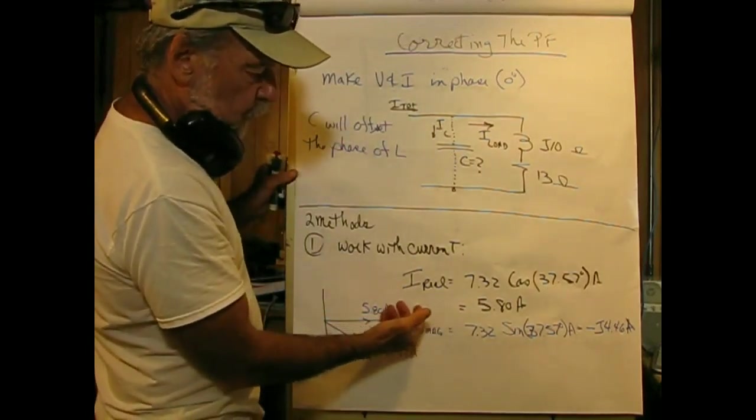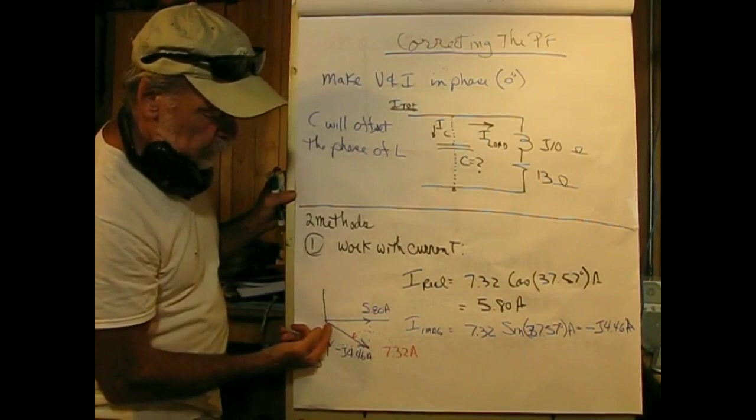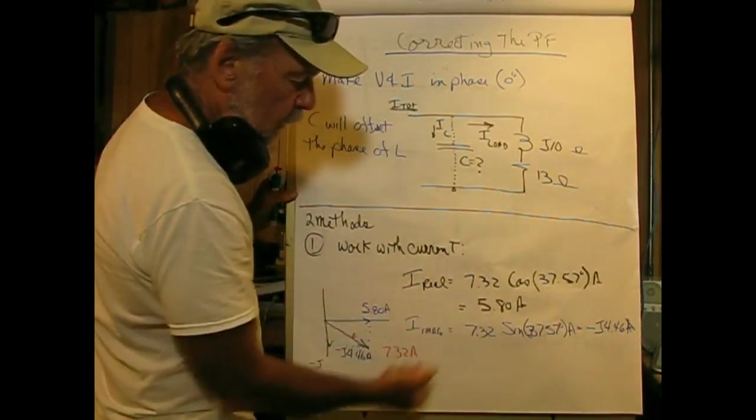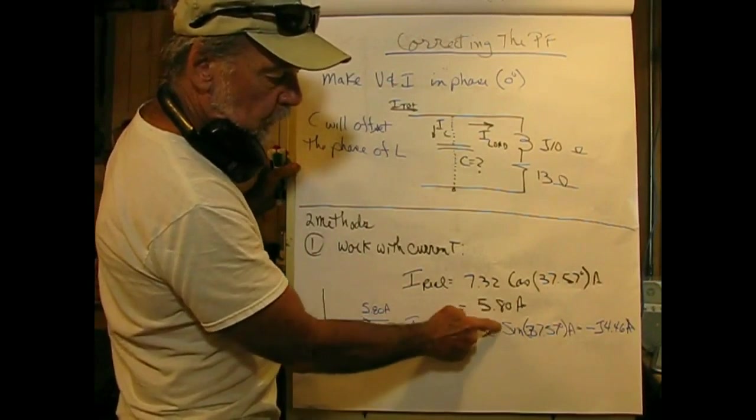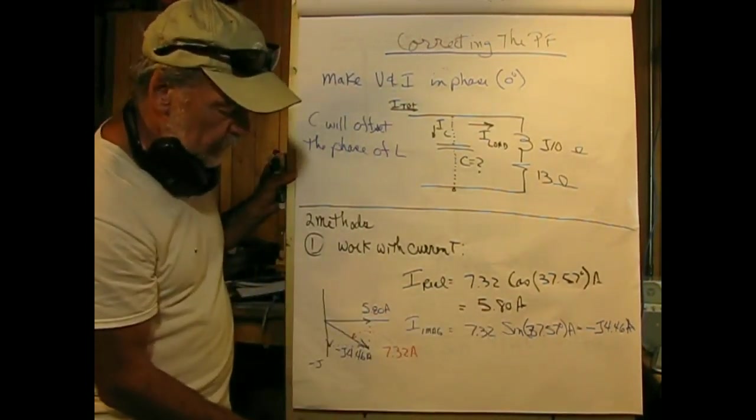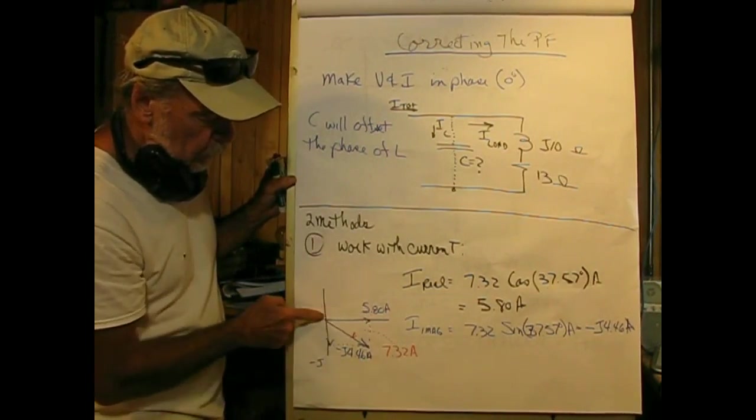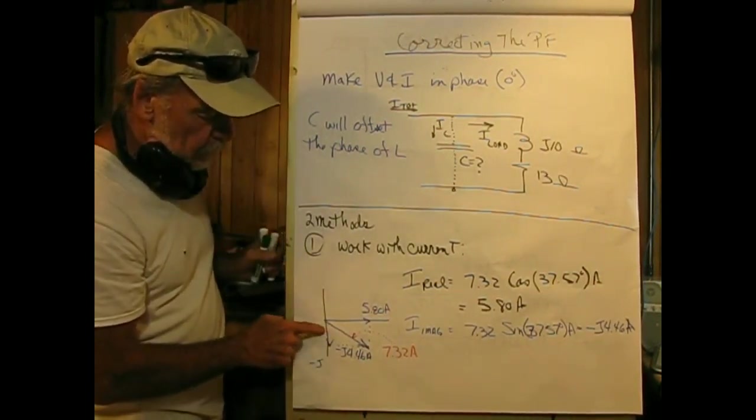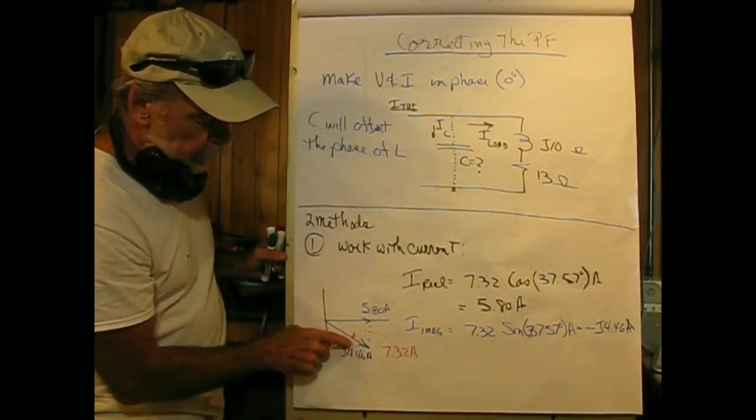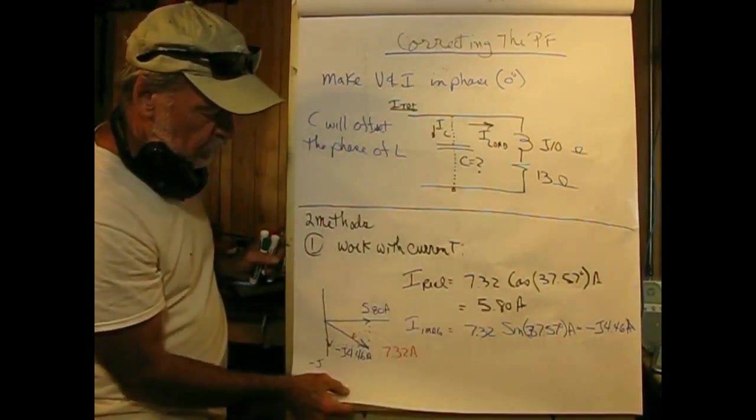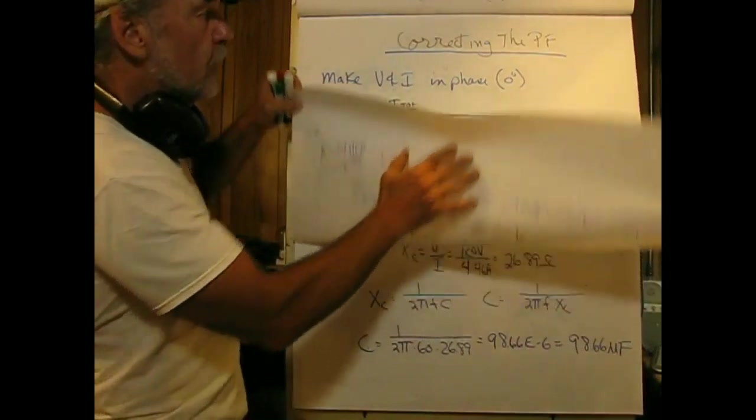I'll start with the current method. We know what the current is, and we know what the angle is. We can break that current down into real and imaginary components. We take the magnitude and multiply by the cosine of the angle, and the real component of the current is 5.80 amperes. Likewise, the imaginary component is the same formula except taking the sine, and that comes out to negative J 4.46 amperes. So we decomposed the current into its real and imaginary components.